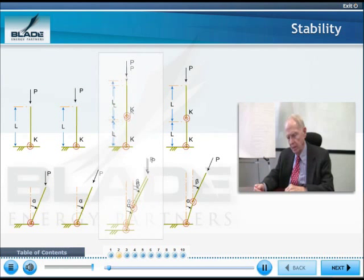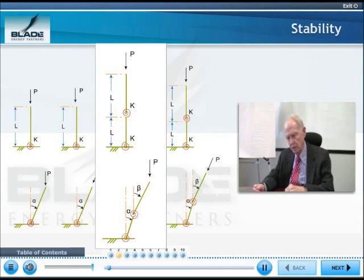The third problem is two links. Each bar has the same length. Each torsional spring has the same stiffness. And it sticks straight up if the load P is zero. And now, I put the load that has a potential energy on it.